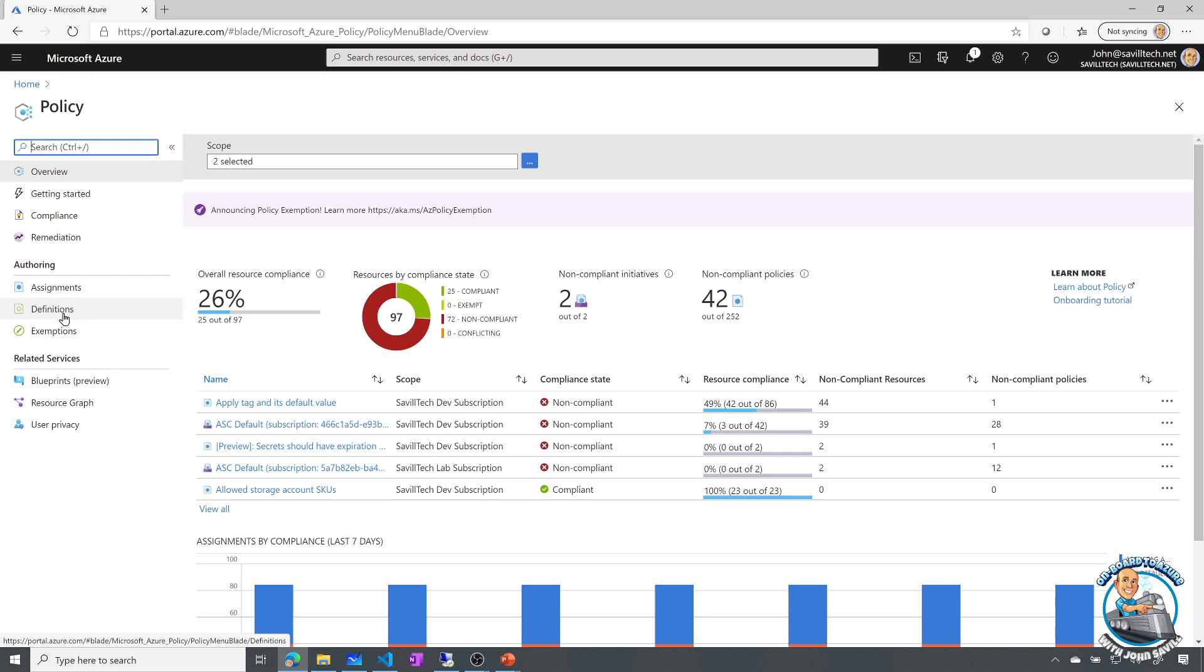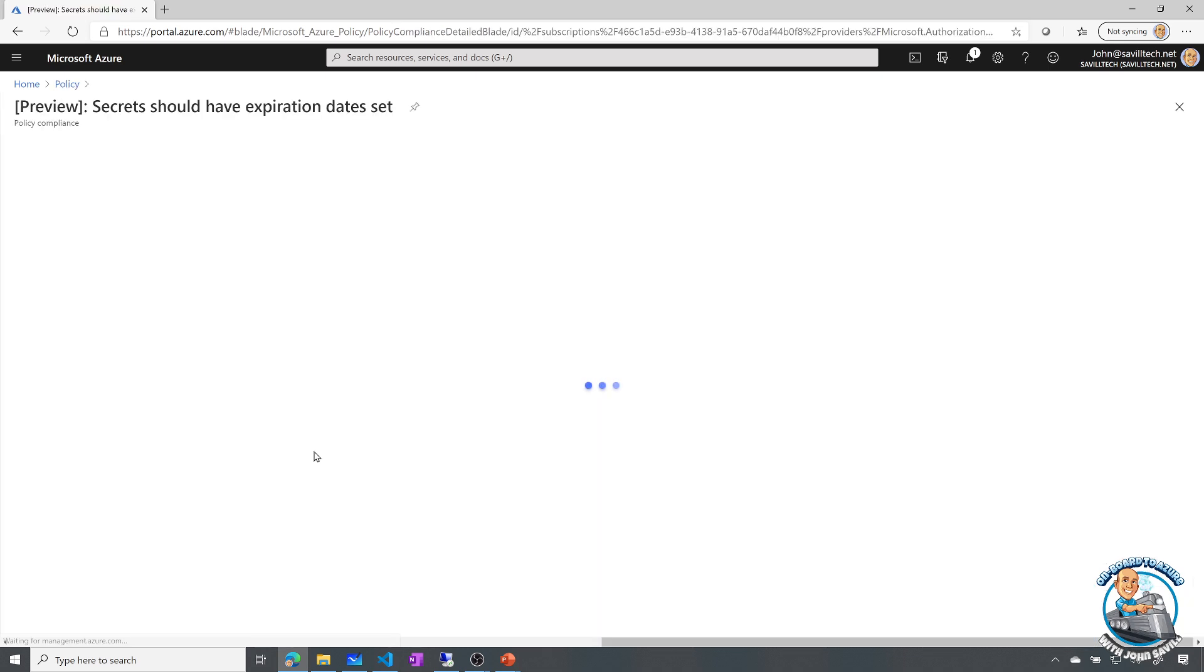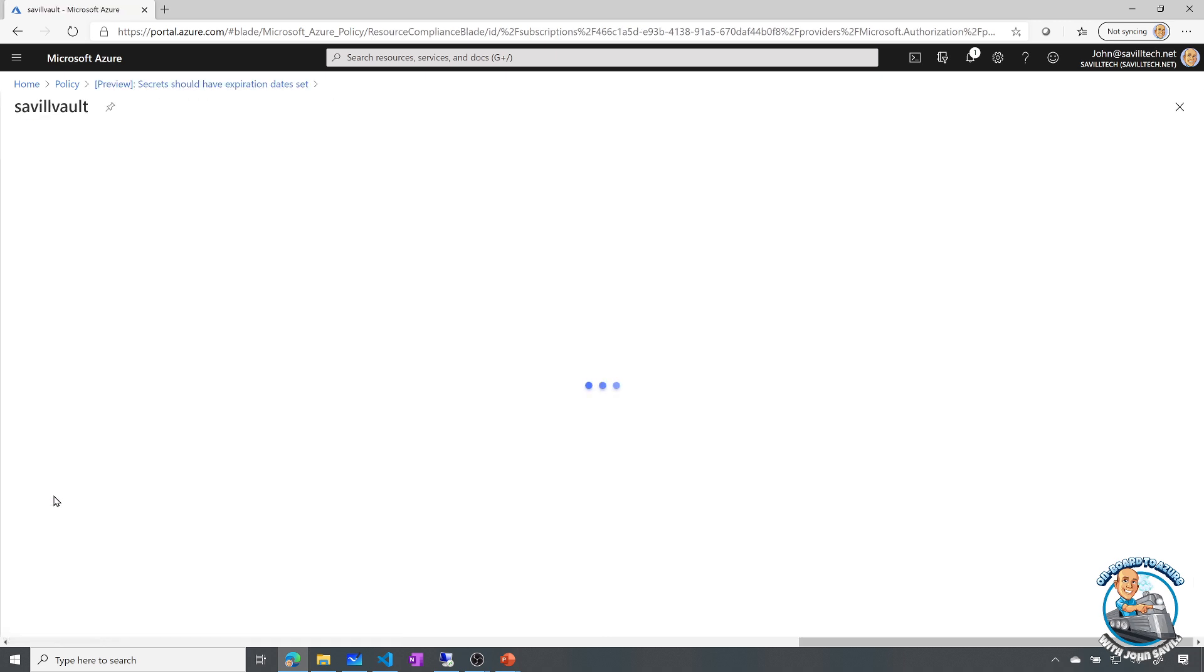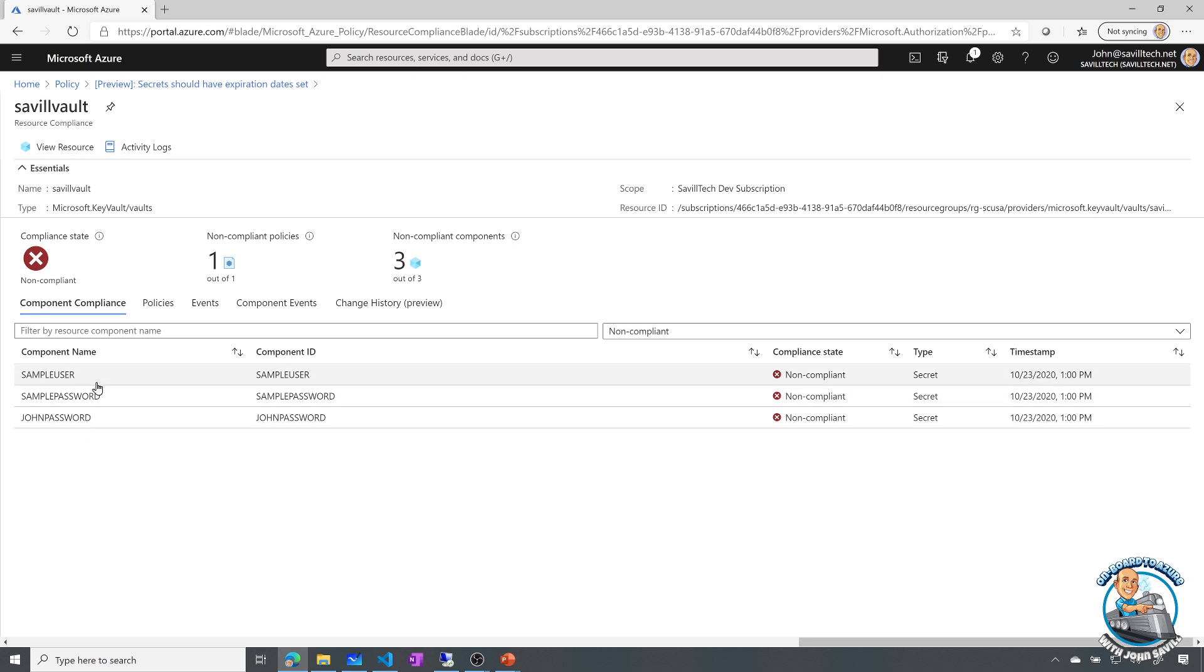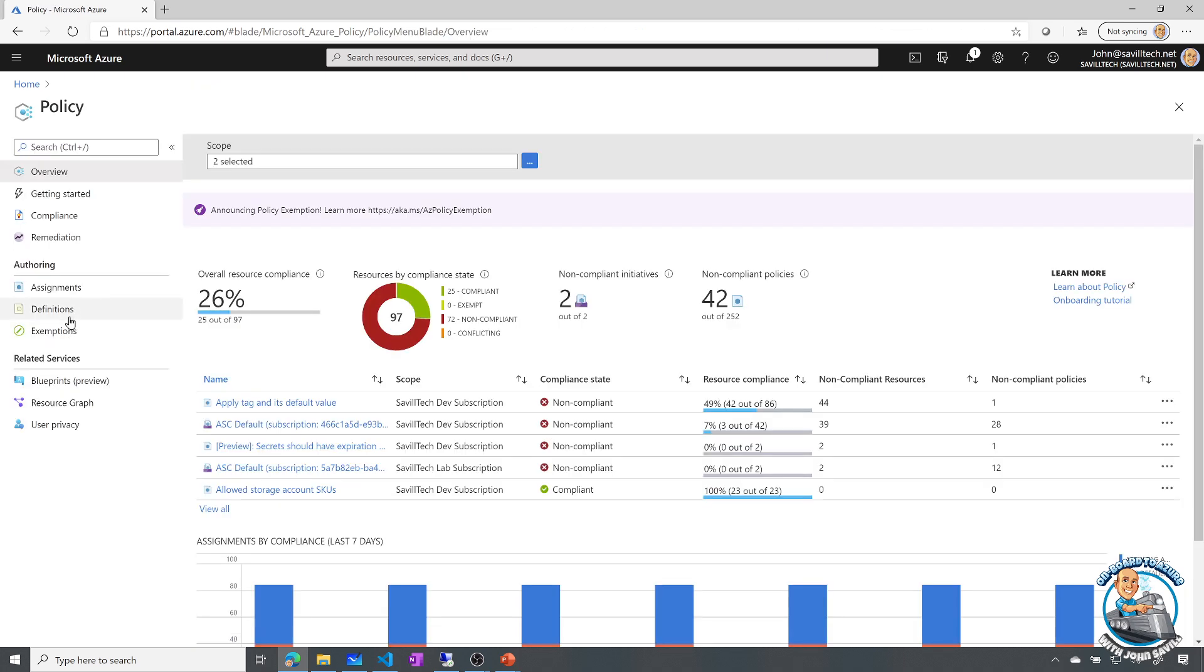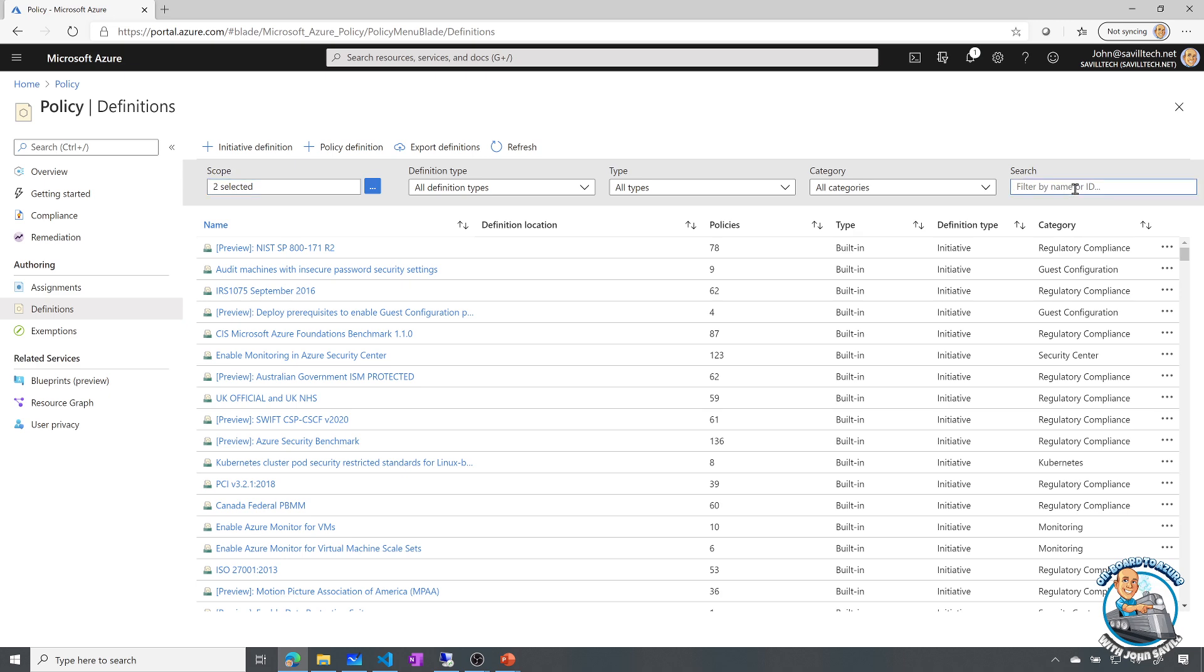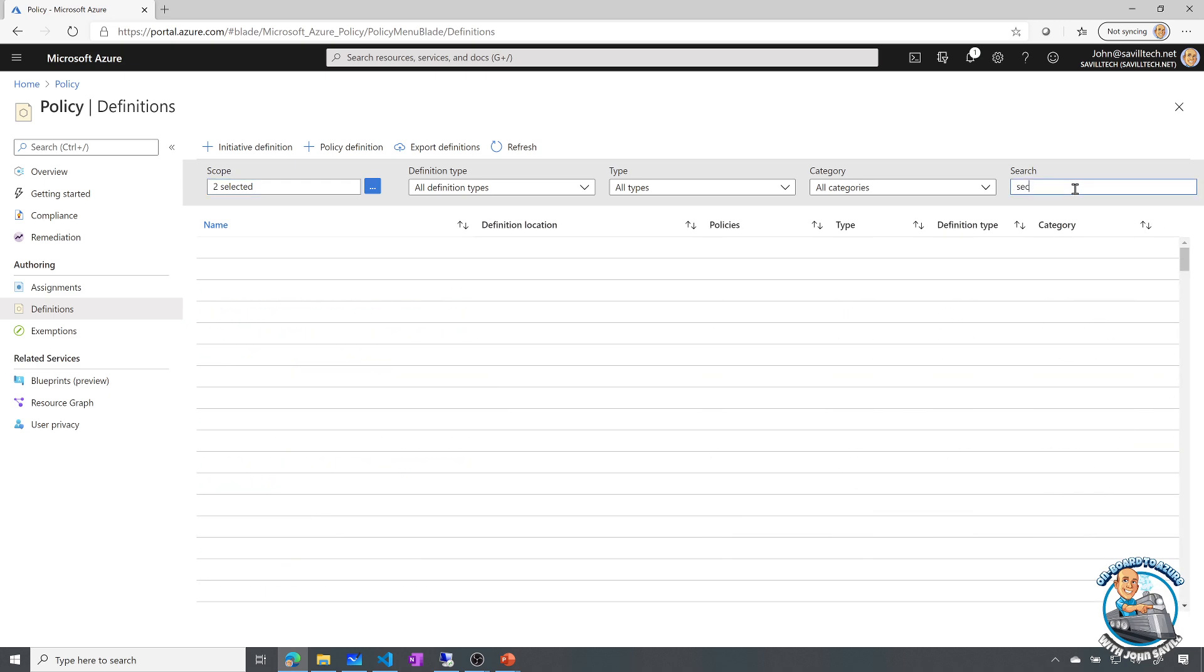Now if I go and look at policy and I look at my definitions, you can actually already see I've got a secret should have expiration and I'm non-compliant. If I actually look at that, it'll actually show me the two resources I have. Well, they actually have a bunch of things that are not compliant in there. And I can actually see them. They don't have an expiry. So already I can see that's pretty cool. But if we go to the definitions, I could search, for example, for secret.